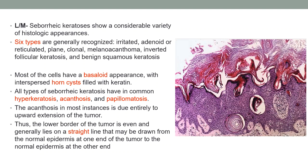The peculiar histopathology of seborrheic keratosis has various variants, but the common feature of all variants is that most cells have a basaloid appearance, and there are many horn cysts or pseudocysts. In addition, there is hyperkeratosis, acanthosis and papillomatosis. The acanthosis is due to upward extension of the tumor instead of downward extension. The lower border of the tumor is even and generally lies on a straight line drawn from the normal epidermis at one end to the other end.